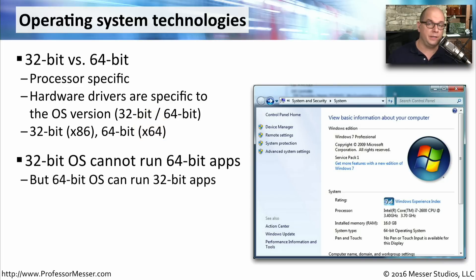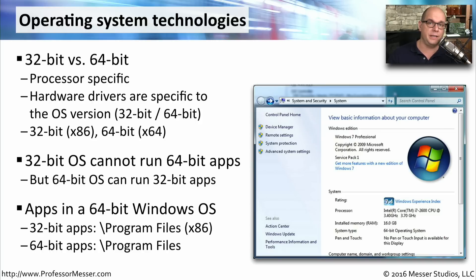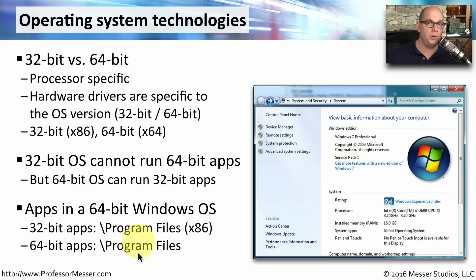The applications you're going to run on these operating systems need to be written for the version you're using. If you're using a 32-bit operating system, you need to run 32-bit applications — you cannot run an application developed for a 64-bit operating system. But if you have a 64-bit operating system, you have the choice of running a 64-bit or a 32-bit application. In 64-bit Windows, 32-bit applications are installed into Program Files (x86), and native 64-bit apps are installed into Program Files.